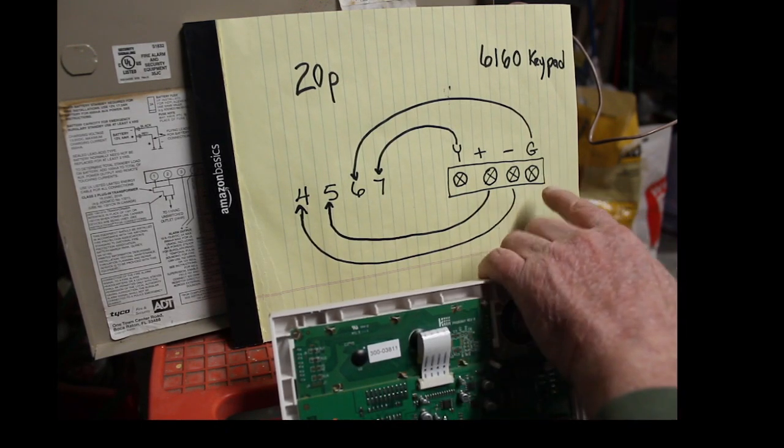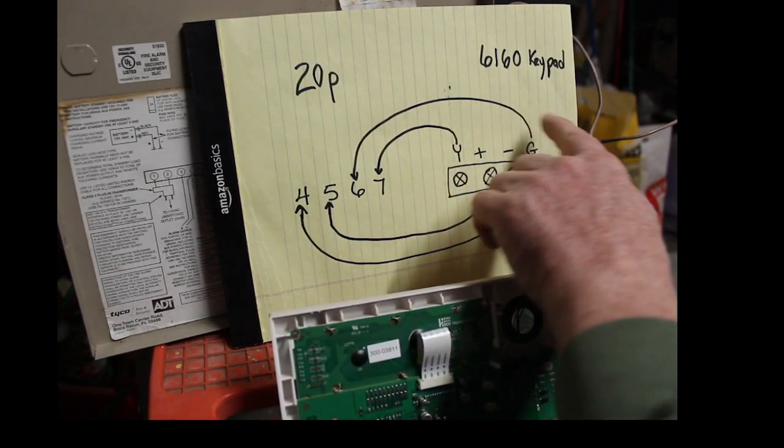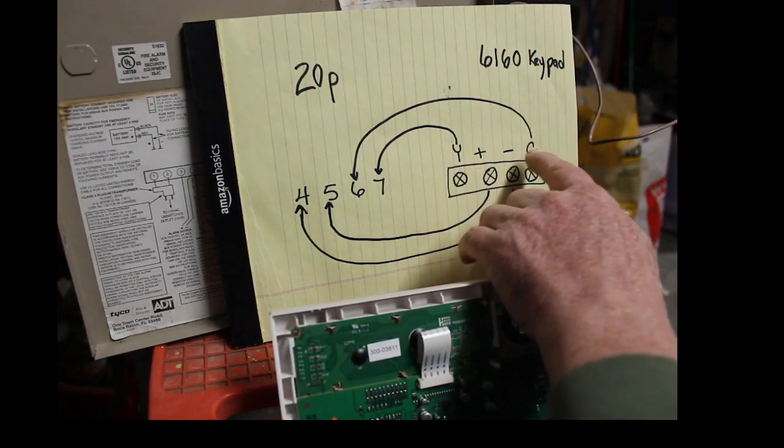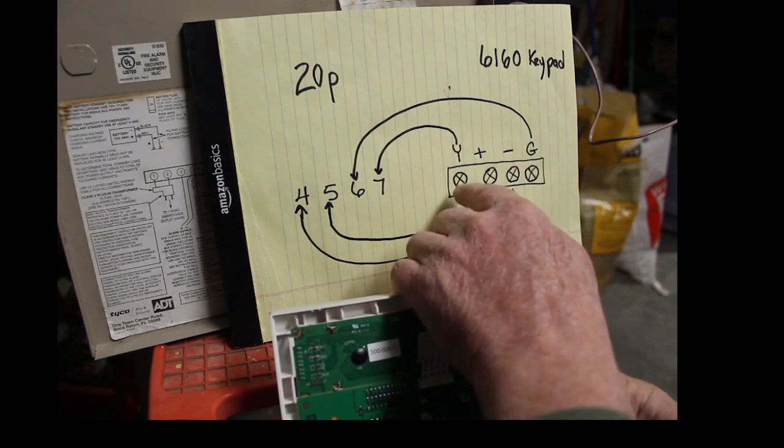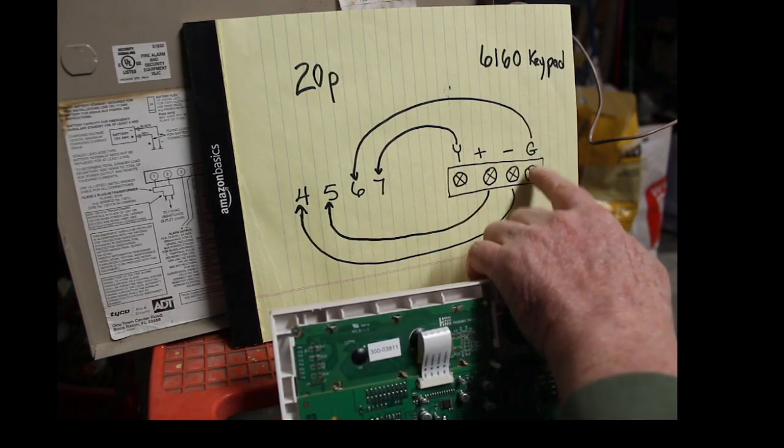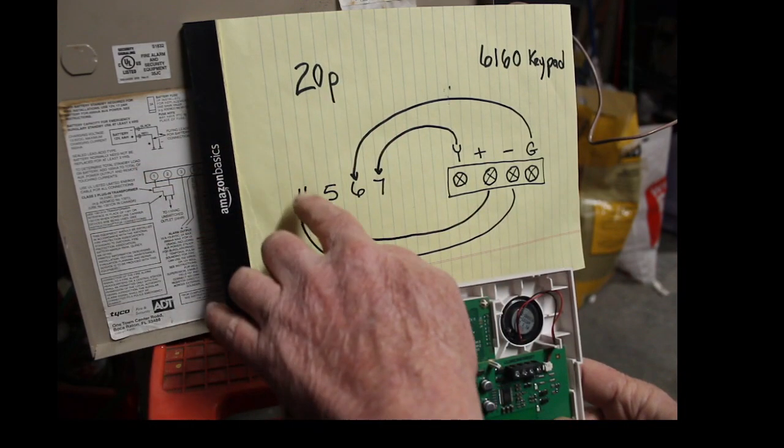And then the far right one is the green, or it could be blue, whatever color you want, that goes to terminal 6. These two colors don't matter - I mean, you could have a blue and orange - but as long as this terminal goes to 7 and this far right terminal goes to 6, you're all set. So on the control panel use 4, 5, 6, and 7.